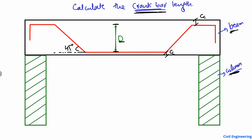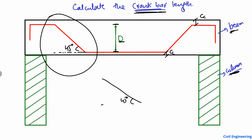Crank bars are mostly bent at 45 degrees. If I take this part of the beam — the crank bar — it will be like this: at 45 degrees with the horizontal. We know that this height D, the depth of the crank bar, is known to us. This inclined length is the crank bar length, which I'll call LC. We need to find out this crank bar length using trigonometry.